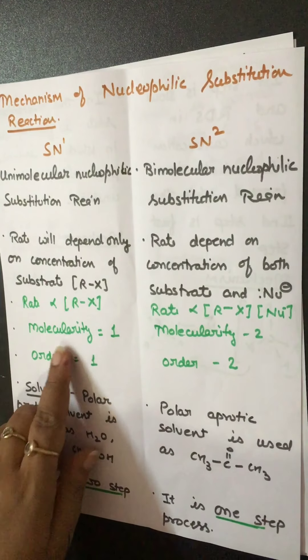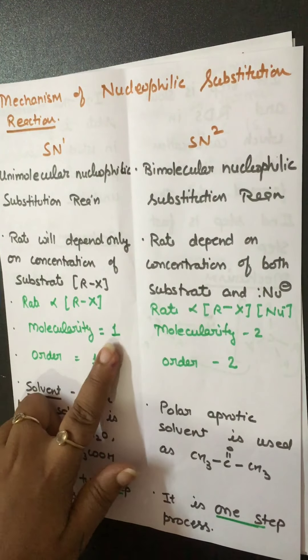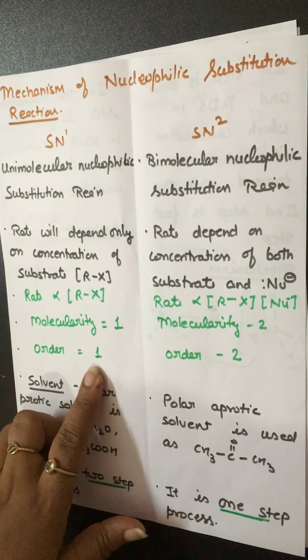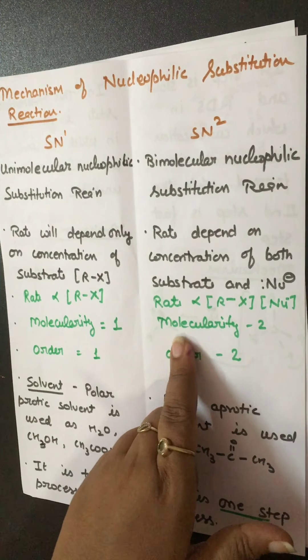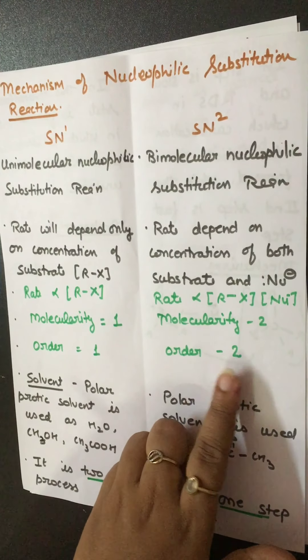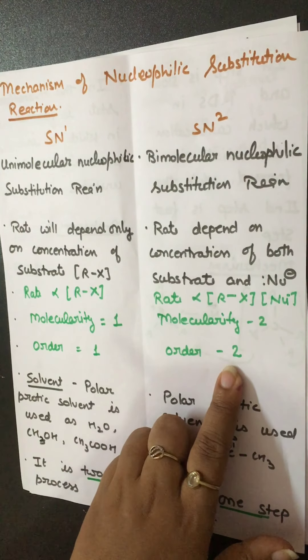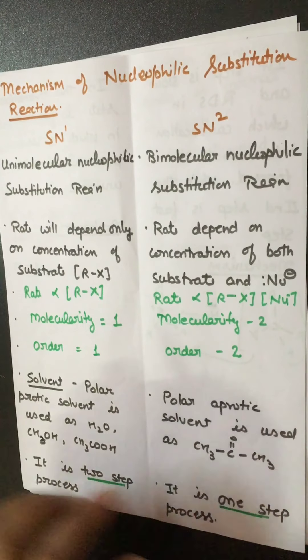In the case of SN1, molecularity is 1 and order is also 1, whereas in the case of SN2, molecularity is 2 and order will also be 2.